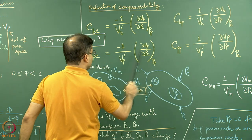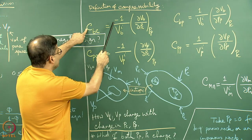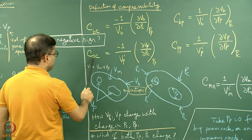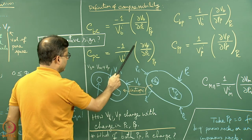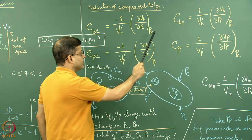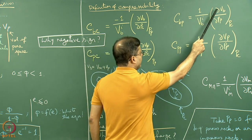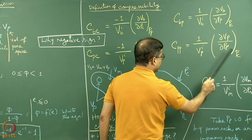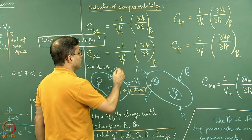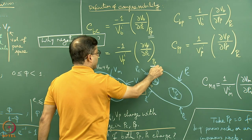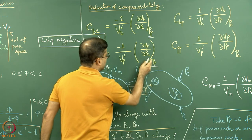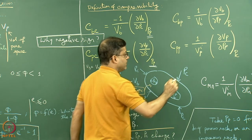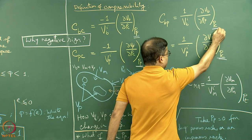There are four equations we need to understand well. Cbc equals minus 1 divided by Vib, times del Vb / del Pc, at constant Pp. Cpc equals minus 1 divided by Vip, times del Vp / del Pc, at constant Pp. In these equations, Pp remains constant — meaning only the confining pressure is changing. In the Cbp and Cpp equations, Pc is constant.